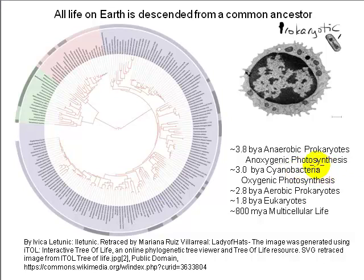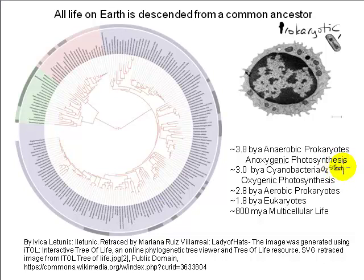But around 3 billion years ago, there was a shift to oxygenic photosynthesis carried out by the cyanobacteria. This ultimately led to an increase in the concentration of molecular oxygen in the atmosphere, which was important for a number of reasons — I'll just mention two.